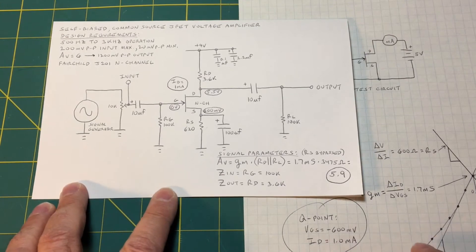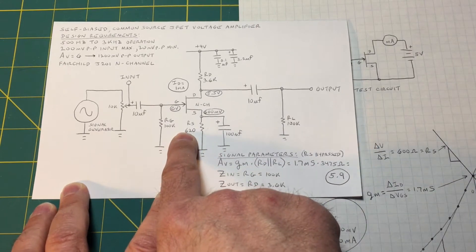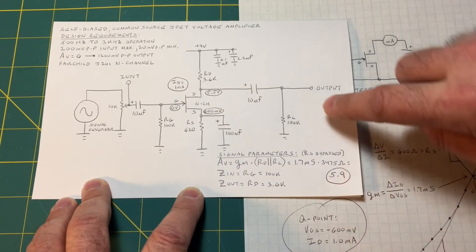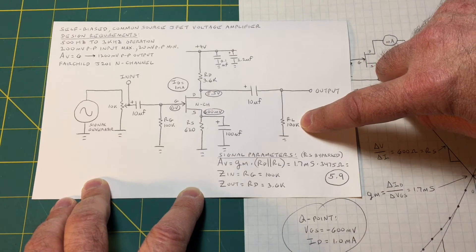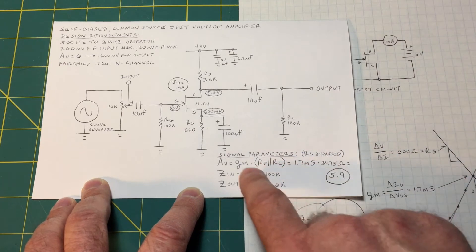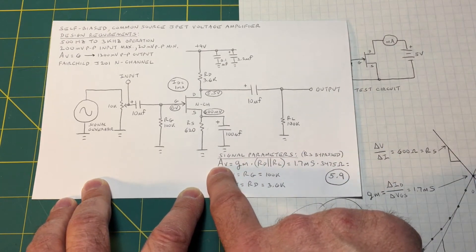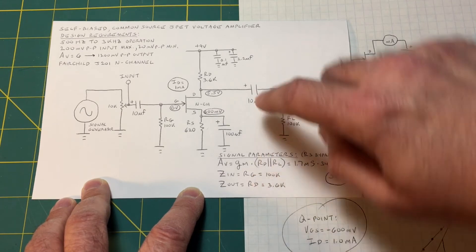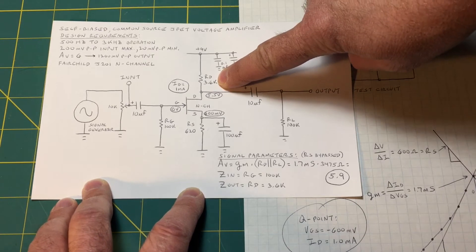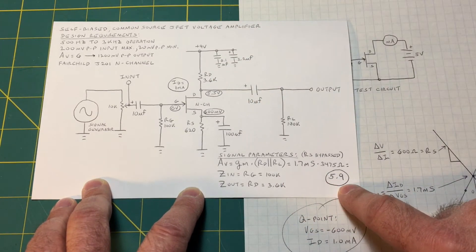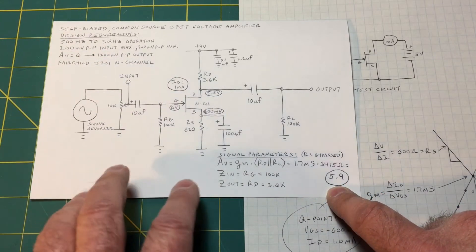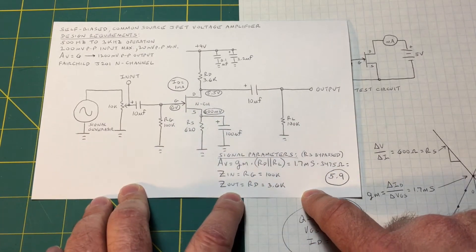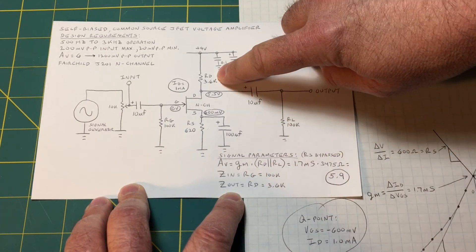Coming back to the schematic, we have a few more pieces of the puzzle. We know the transconductance and the value of the source resistor, which I set to 620 ohms — the closest standard value in my parts inventory. We have a load resistance of 100k on this circuit. We can manipulate the formula to figure out the drain resistance, which is approximately 3.6k — another standard value. We can estimate the voltage gain at about 5.9, which is pretty close to our target of 6. The input impedance is equal to the gate resistor, which is 100k, and the output impedance looking into an open is the drain resistor at 3.6k.